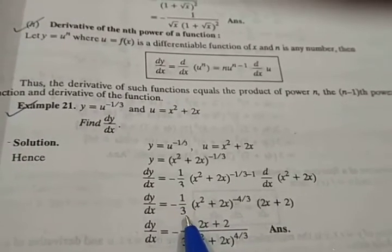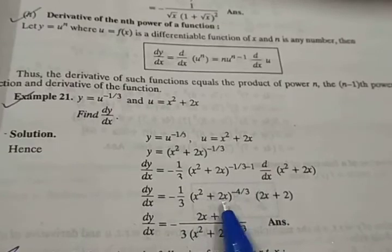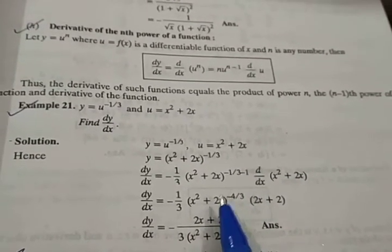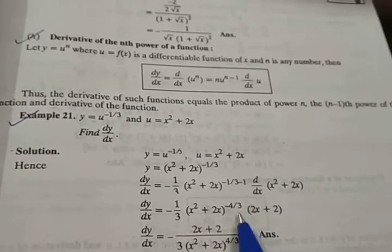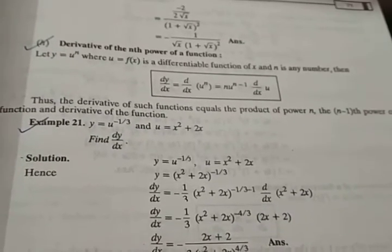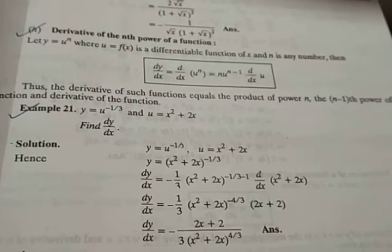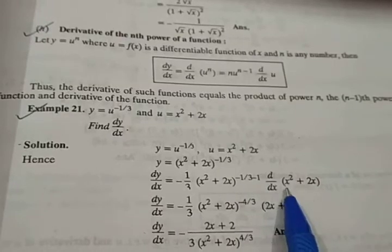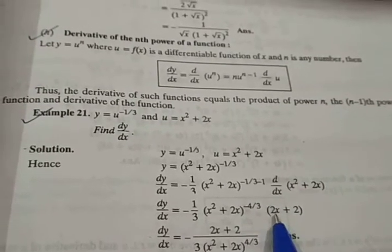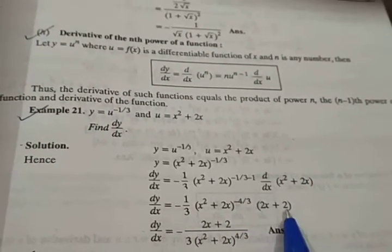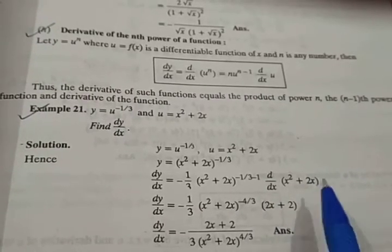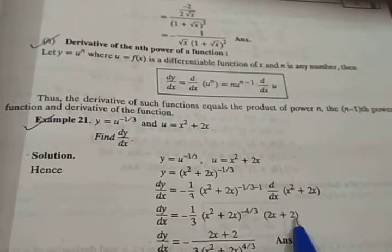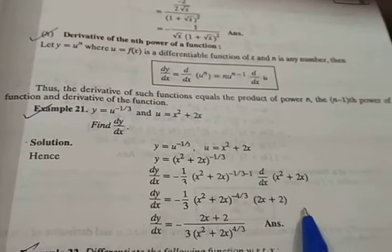So ahead you just have to solve it. So minus 1 by 3, into x square plus 2x. You take the LCM, so you get raised to power minus 4 by 3, into derivative of this bracket. So that means derivative of x square plus derivative of 2x. So derivative of x square is power down 2, x raised to power 2 minus 1, so this is 2x, plus derivative of 2x is 2 constant into derivative of x, which is 1, so 2 into 1.